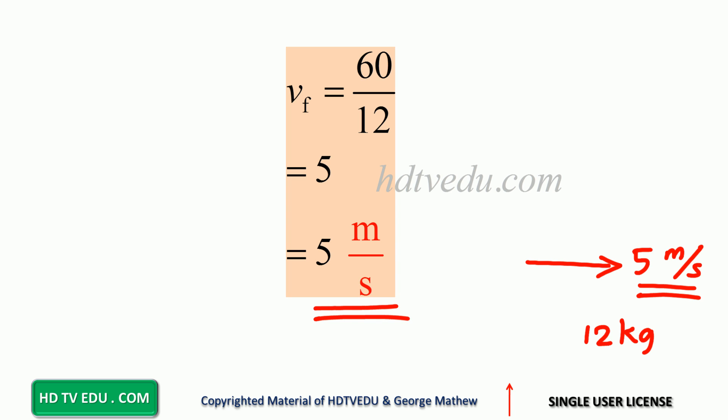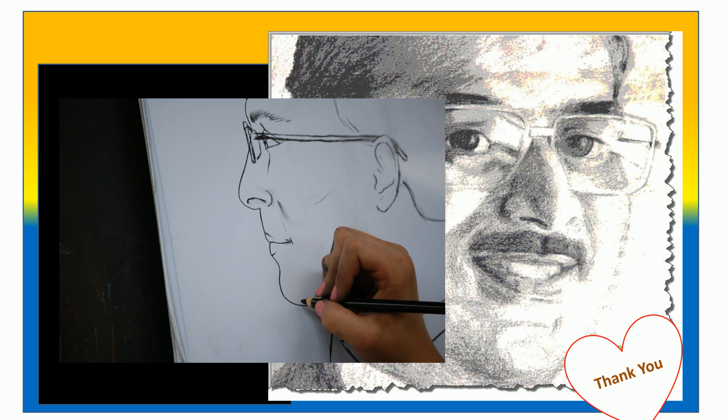Momentum before should equal momentum after. Before collision we had 5 kg moving at 12 and 7 kg at rest, so what did we get? 60 kg·m/s as momentum. And this is George Matthew signing off, good luck.